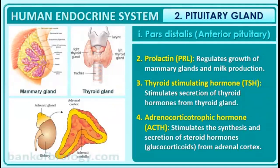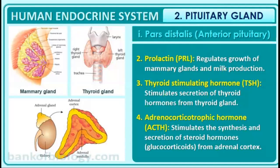Next is prolactin hormone — it regulates the growth of the mammary glands and milk production. Thyroid stimulating hormone stimulates the secretion of thyroid hormones from the thyroid gland. When TSH is released from the pituitary, it goes to the thyroid and signals it to secrete its hormones. The adrenal gland is located on the kidneys. The pituitary gland hormones essentially stimulate the next gland to release or inhibit their hormones.